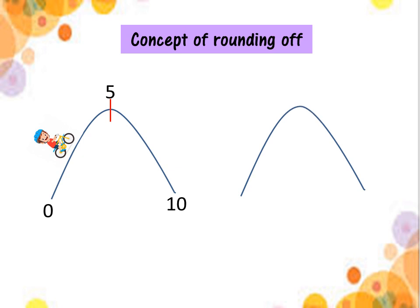Let's look at the second diagram. The same thing — 0 and 10, and 5 at the middle on the top of the hill. Now this boy is going down. Budak lelaki ini nak turun bukit. If he stops at this place, what will happen to him? Dia akan jatuh ke 0 ke 10? Of course, dia akan jatuh ke 10. So, this is the concept of rounding off.